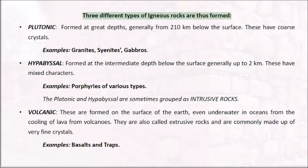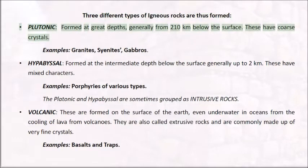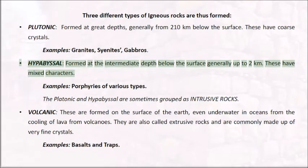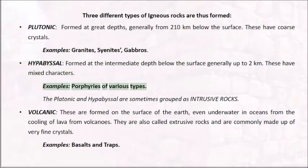Three different types of igneous rocks are thus formed. Plutonic rocks are formed at great depths, generally from 2 to 10 kilometers below the surface; these have coarse crystals. Examples include granites, syenites, and gabbros. Hypabyssal rocks are formed at intermediate depth below the surface, generally up to 2 kilometers; these have mixed characters. Examples include porphyries of various types.